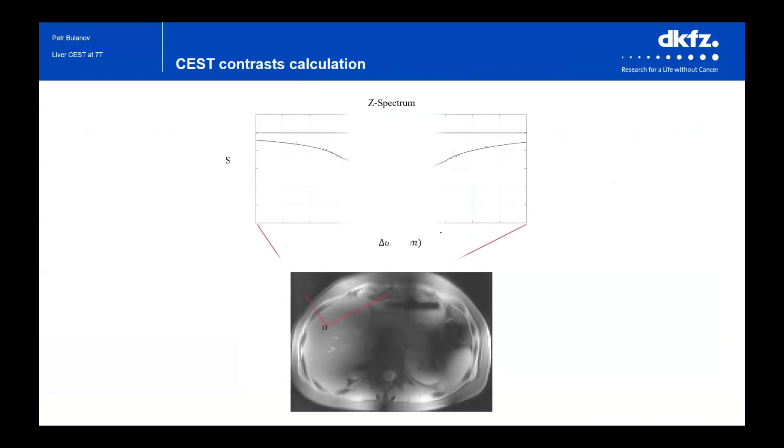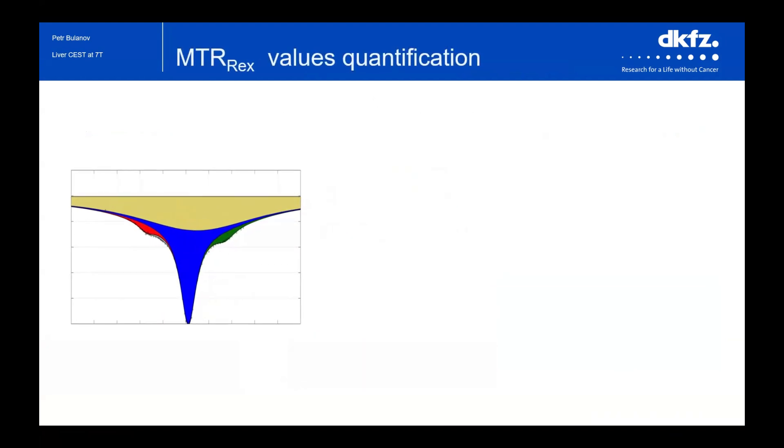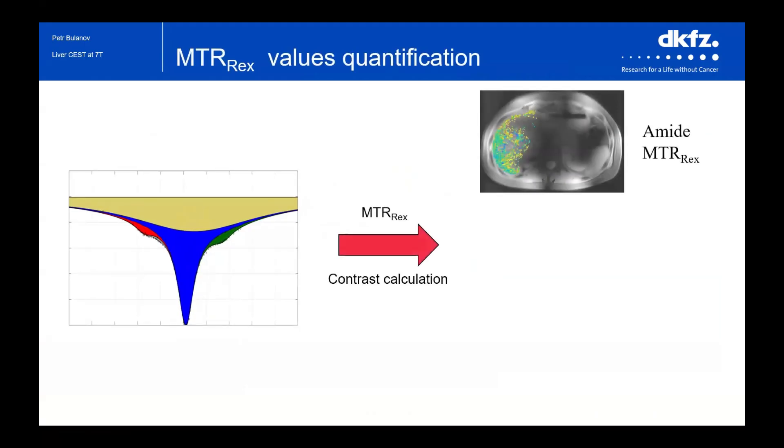To calculate CEST contrasts, we need to approximate the spectrum in each pixel of the image. And from the parameters of this approximation, we can calculate desired contrasts.